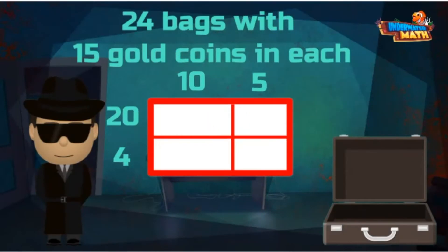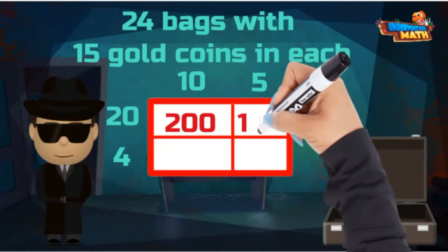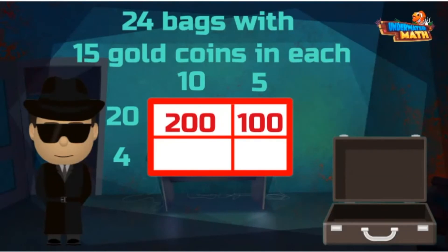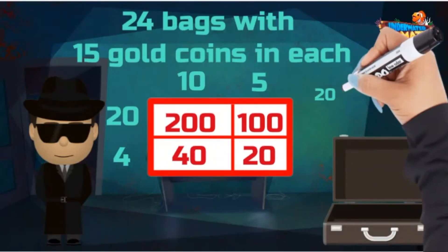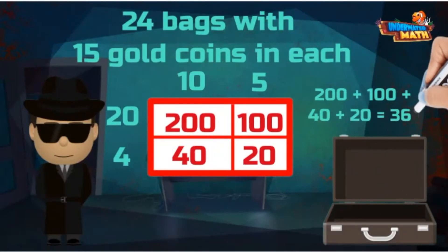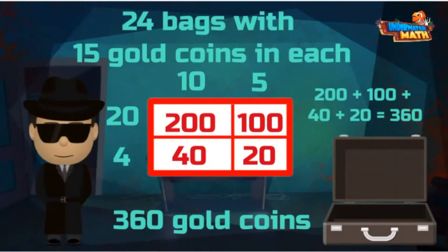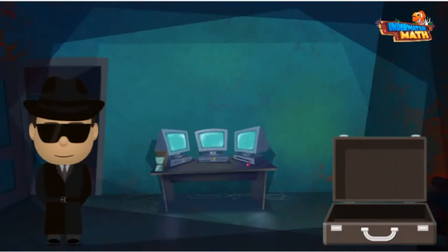Then I multiply for each area: 20 times 10 equals 200, 20 times 5 equals 100, 4 times 10 equals 40, and 4 times 5 equals 20. When I add each partial product, I get the final product of 360. Suspect one stole 360 gold coins — he's going to be in a lot of trouble!